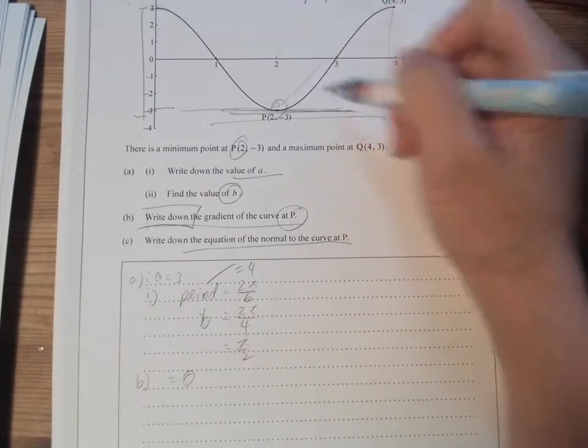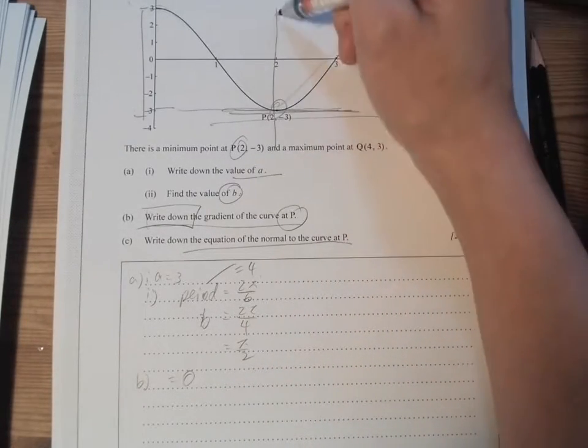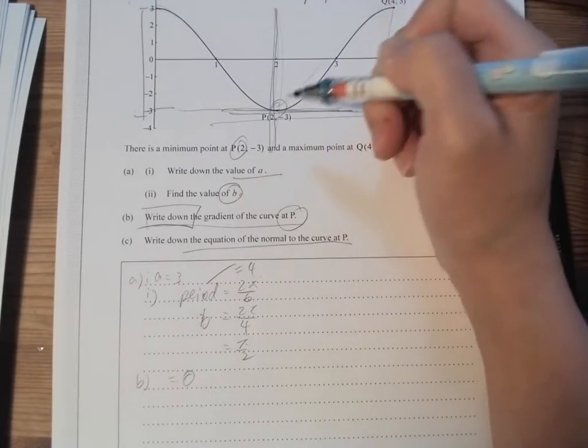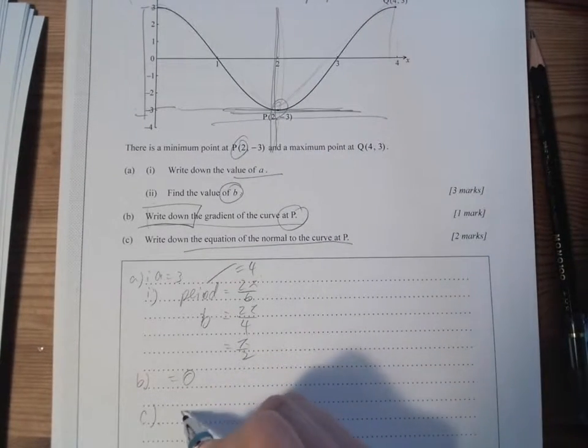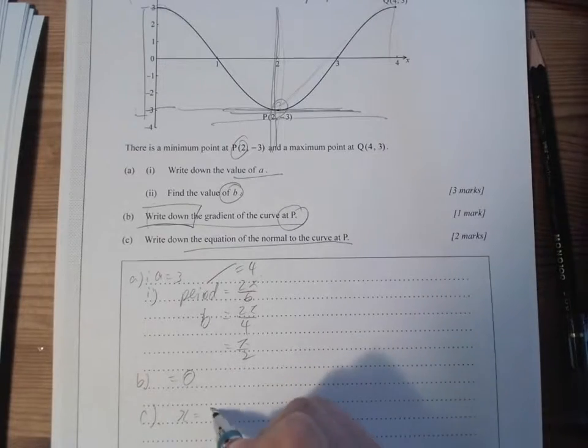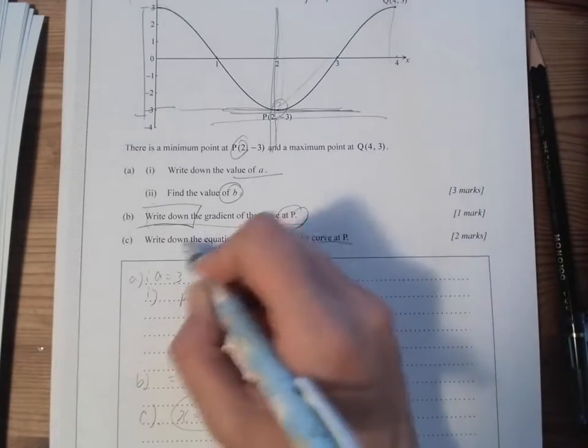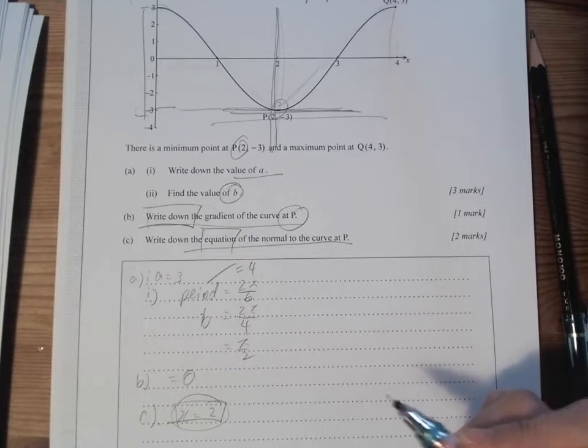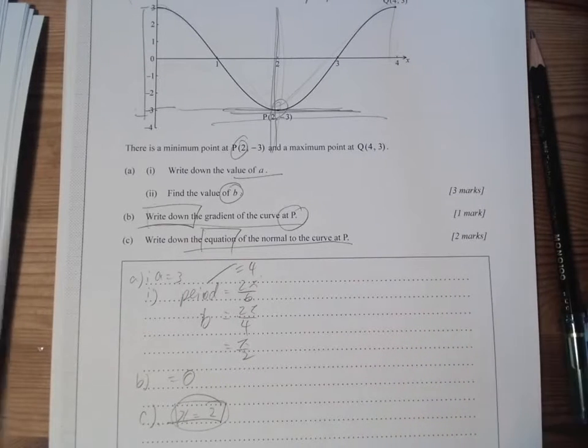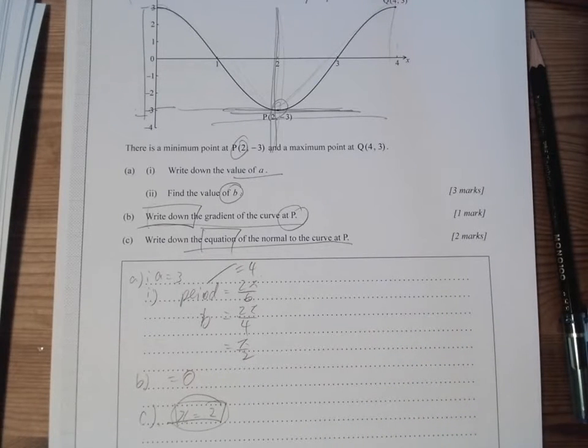And write the equation of the normal of the curve. Since this is a horizontal line, the equation of normal should be a vertical line. Therefore, C would be x equals to 2. Do remember it needs an equation, so we have to be x equals 2, otherwise you don't get any point. So this question, no calculation is required.